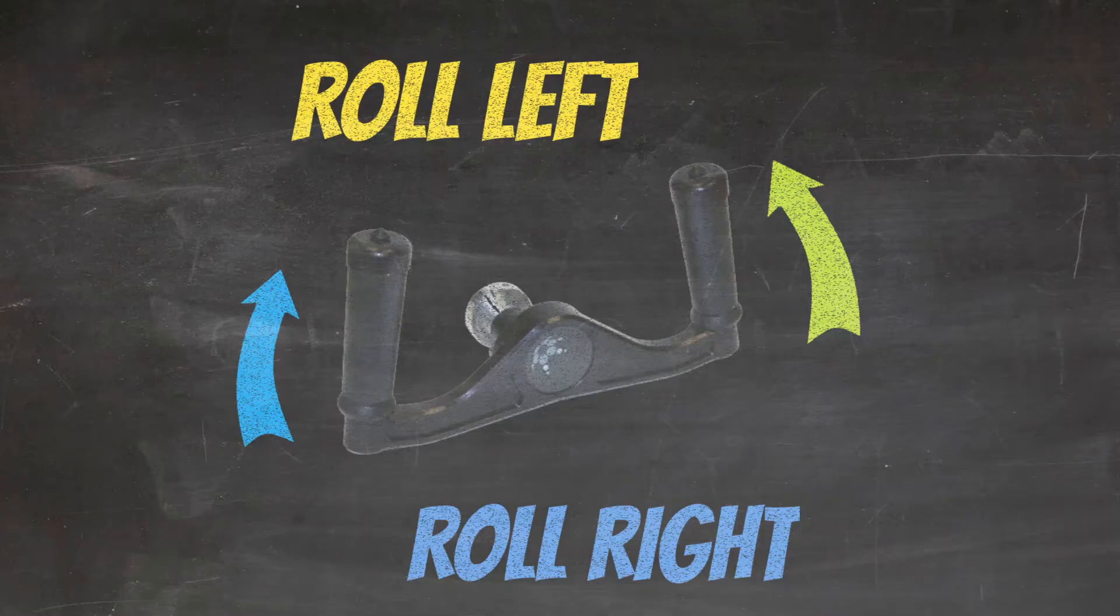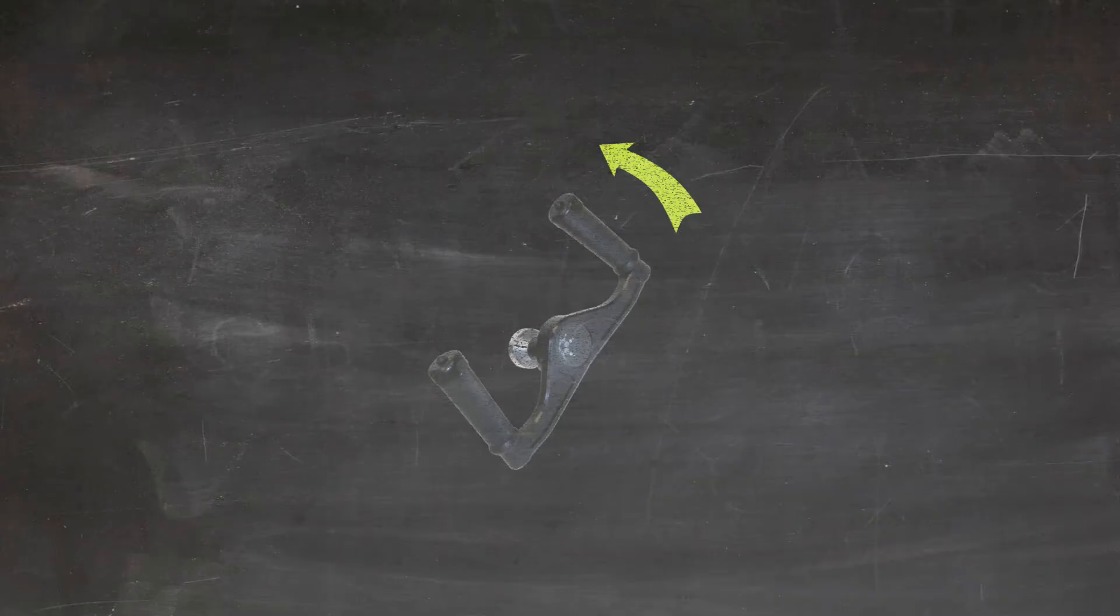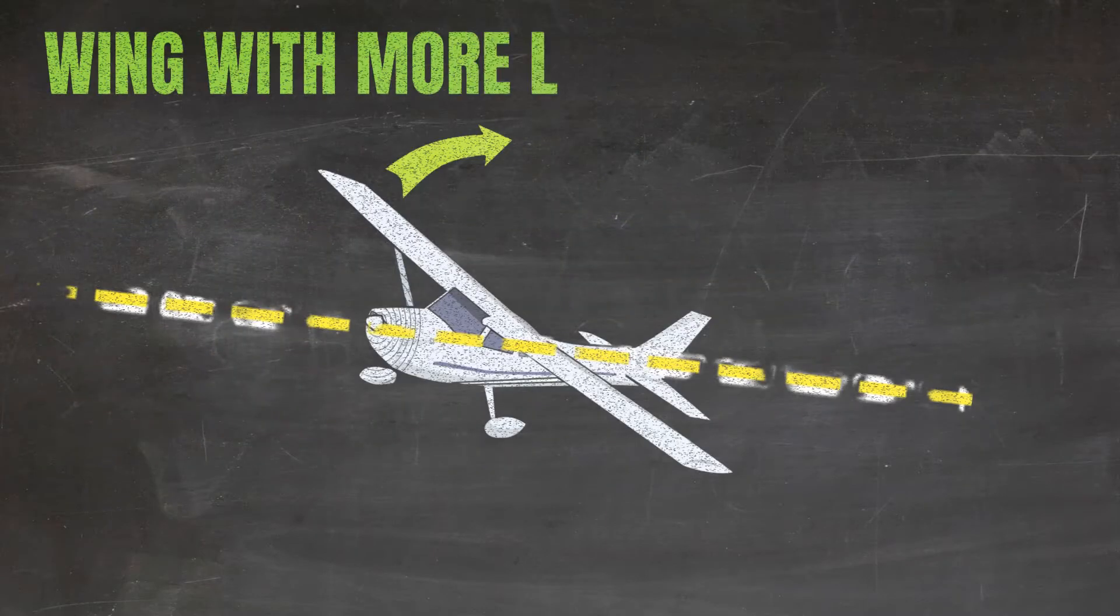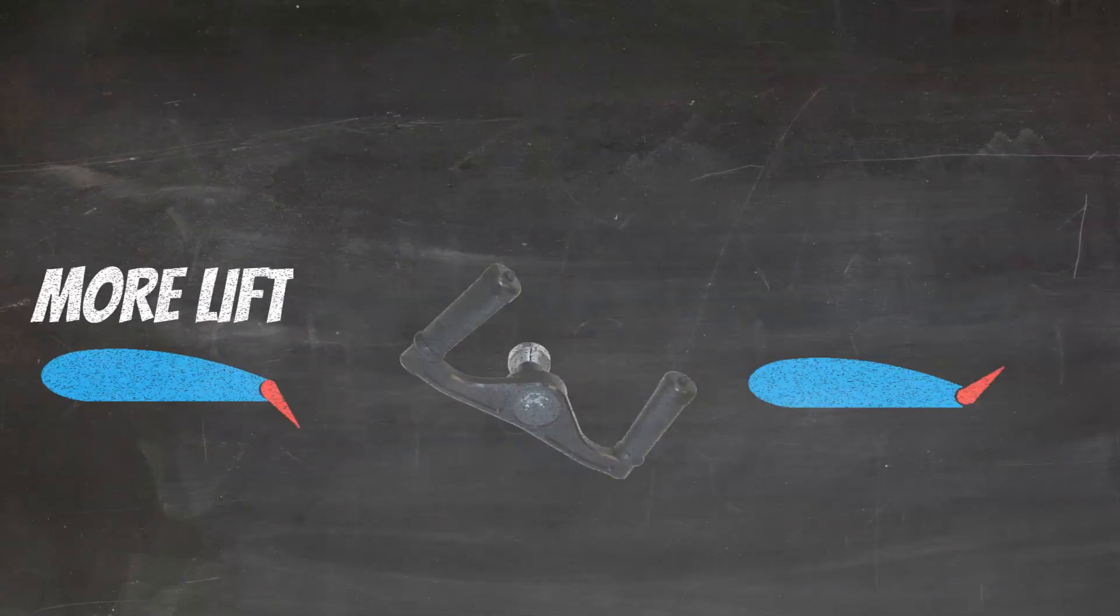Let's talk about how that works for just a second. When we rotate the yoke to the left, it raises the left aileron and lowers the right aileron. The lowered aileron will create more lift and it will cause that wing to rise. Then if you rotate the yoke in the opposite direction, the other aileron will lower and cause a roll in the opposite direction.